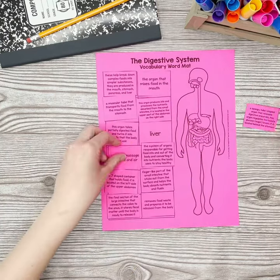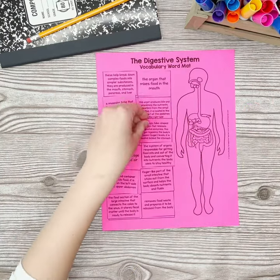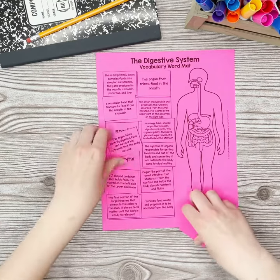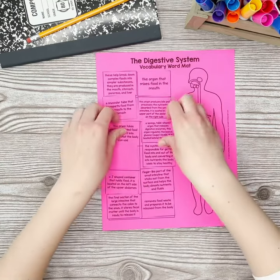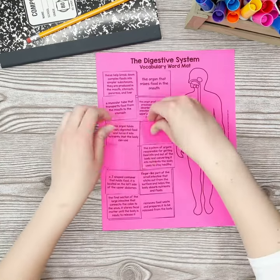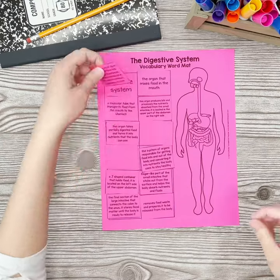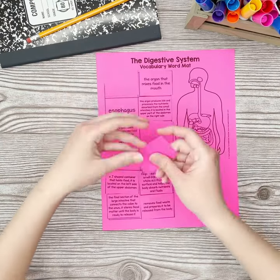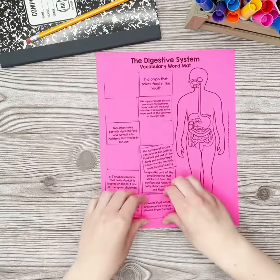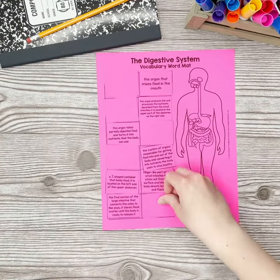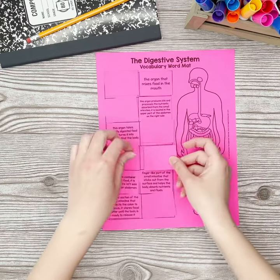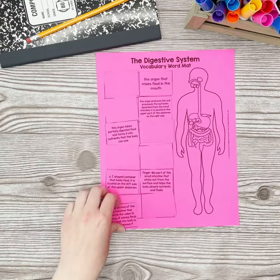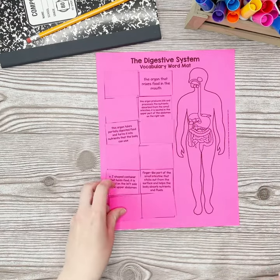While students work to match definitions to words, you can rotate the room to provide feedback. I like to flip over the definitions for terms that students have matched correctly, and either move incorrect placements off the mat or let them know that the terms left face up are incorrectly placed and need to be revisited.